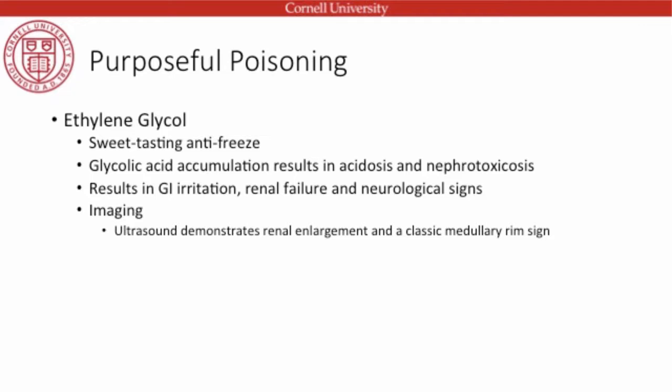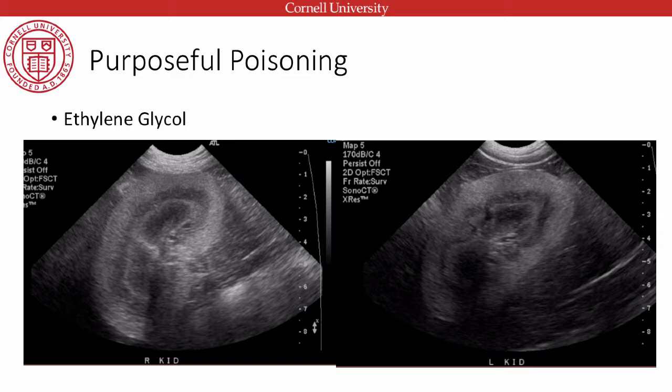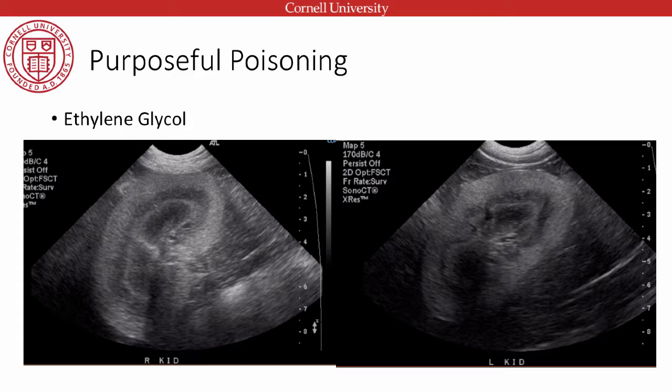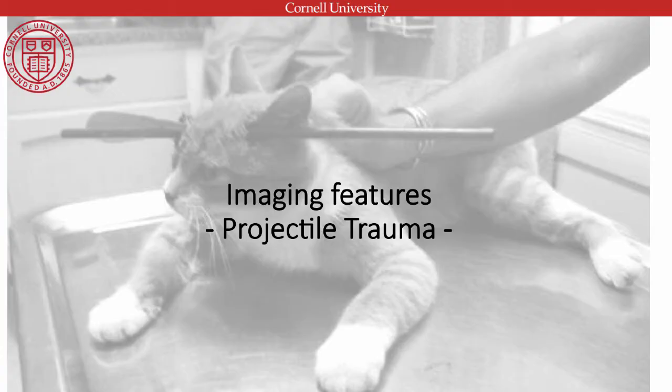Moving on to ethylene glycol — a sweet-tasting antifreeze liquid. Glycolic acid accumulates, resulting in acidosis and nephrotoxicosis, with GI irritation and progressive neurological signs. Imaging focuses on ultrasound because of classic renal changes. Ethylene glycol toxicity produces renal enlargement and a classic medullary rim sign — a bright peripheral cortex, dramatic corticomedullary definition, and a bright white stripe within the medulla. This medullary rim sign is very classic for ethylene glycol toxicosis.